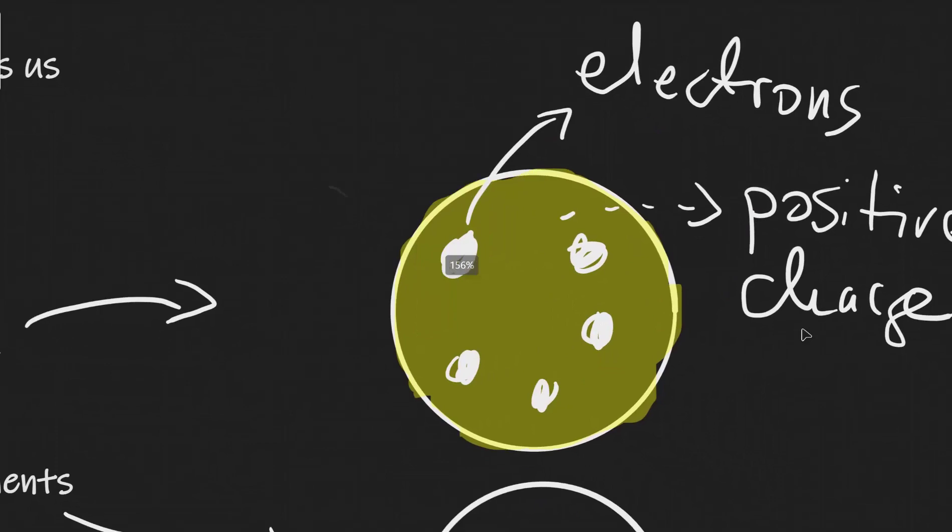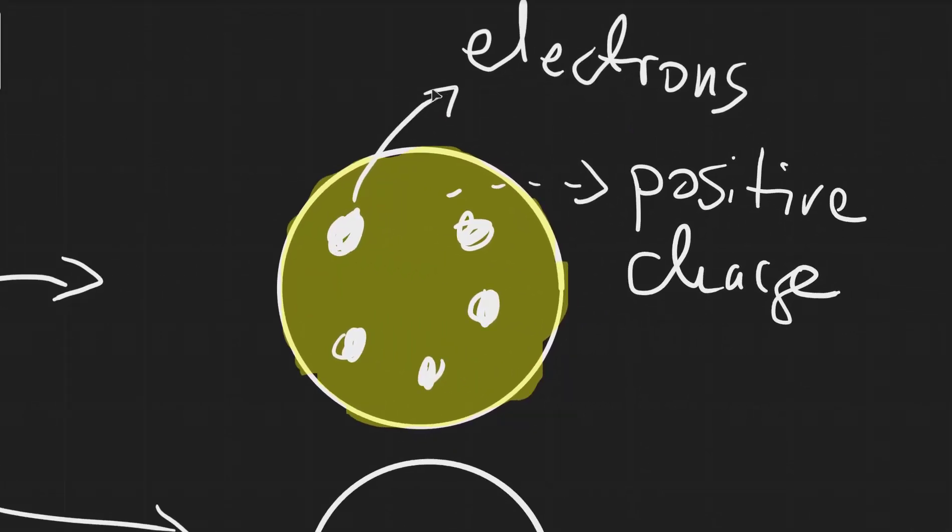For instance, after the electron was discovered, the prevailing model was the plum pudding model which is just represented across here. In the plum pudding model we have the electrons acting as plums within a pudding. The actual dough of the pudding is the positive charge.